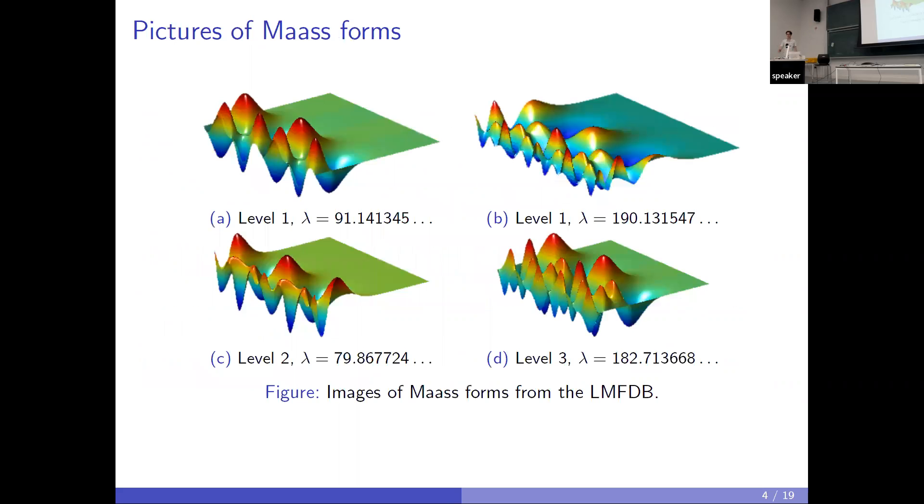Here are some pretty pictures from the LMFDB. This one on the top left is the first level one Maass form. On the right, the first even Maass form, and then some level two and level three forms. What's nice about these functions is that you can plot them very nicely as complex wave functions.